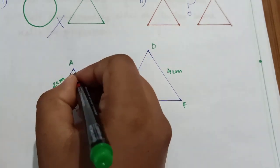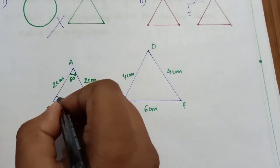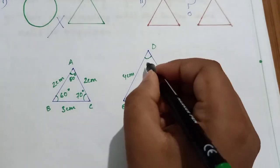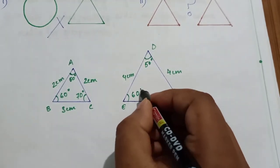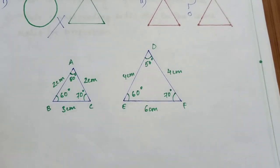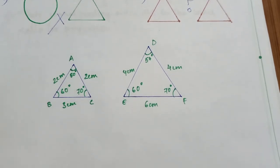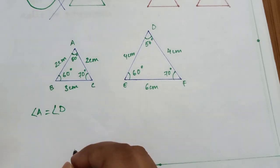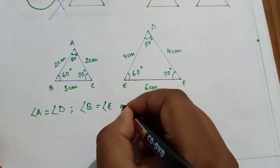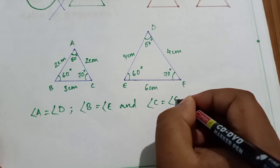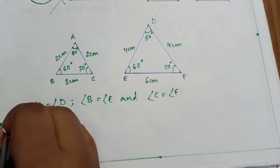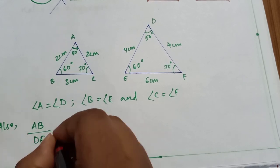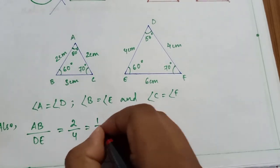According to the figure, angle A is equal to 50 degrees, angle B is equal to 60 degrees, angle C is equal to 70 degrees. Similarly, angle D is equal to 50 degrees, angle E is equal to 60 degrees, and angle F is equal to 70 degrees. So angle A is equal to angle D. Similarly angle B is equal to angle E and angle C is equal to angle F. Also, the corresponding sides ratio: AB by DE is equal to 2 by 4, which is equal to 1 by 2.